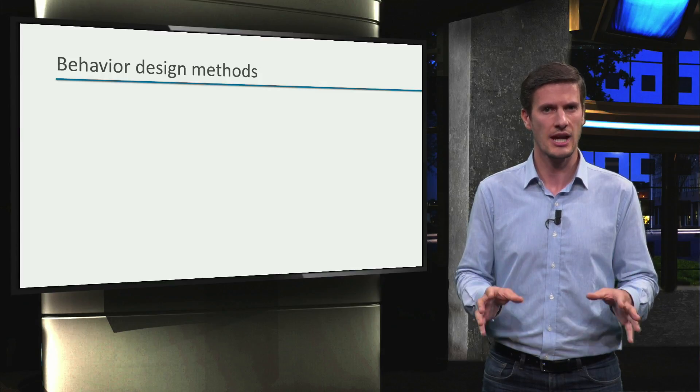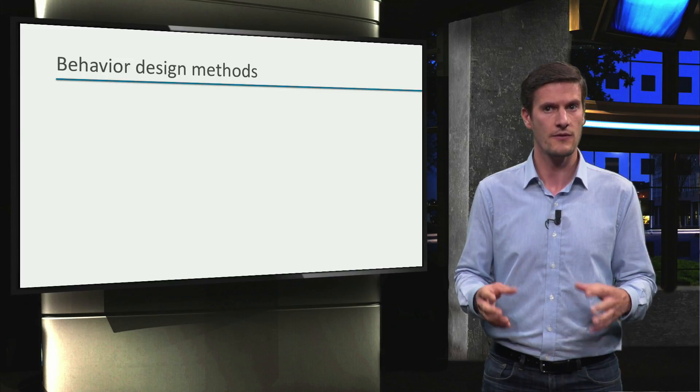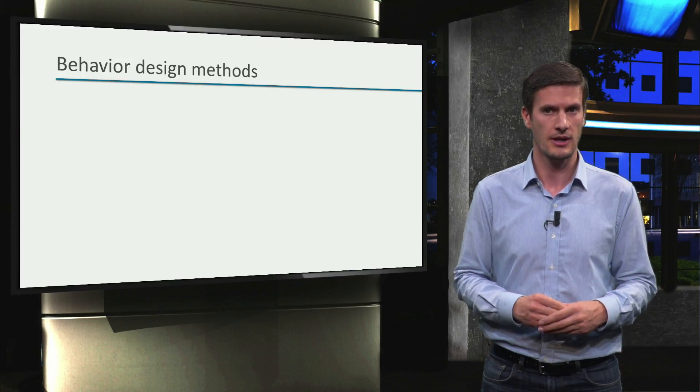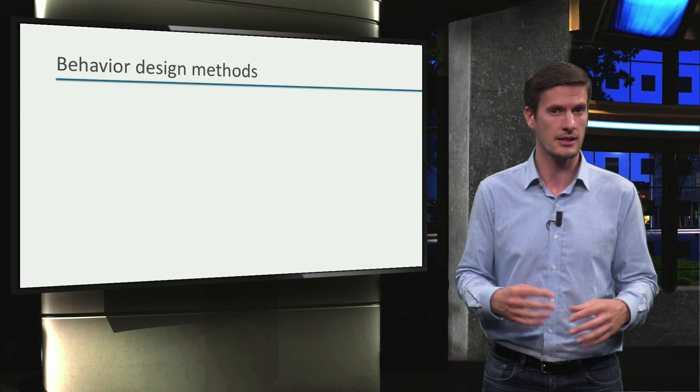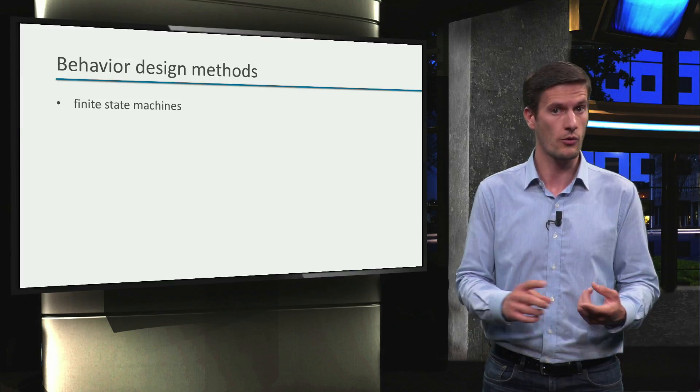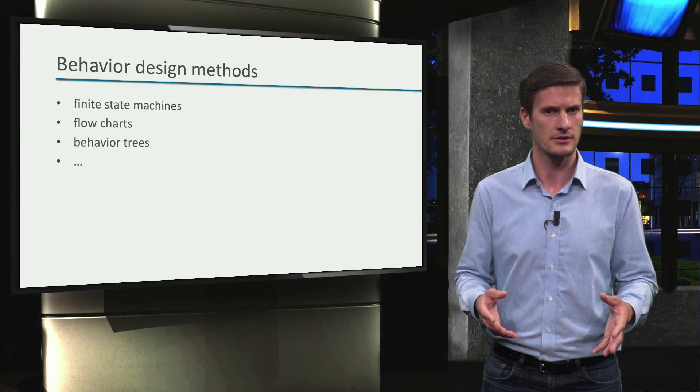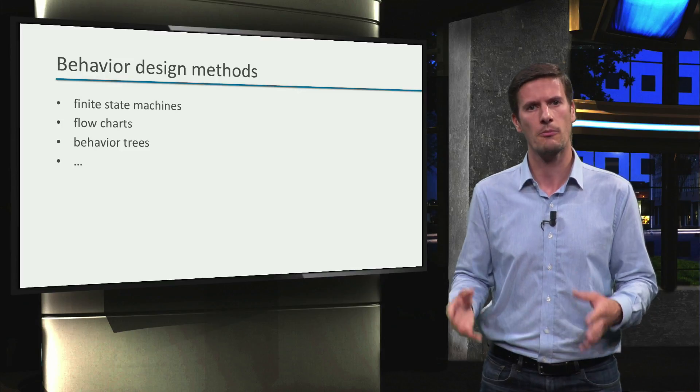The first step is to design the behavior of your robot. To design or specify behavior, there are many methods available, coming from artificial intelligence and computer science. You might be familiar with finite state machines, for example, or flowcharts, but there are more, such as behavior trees, that are better suited for more complex behaviors.